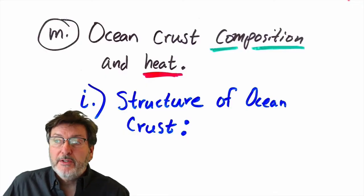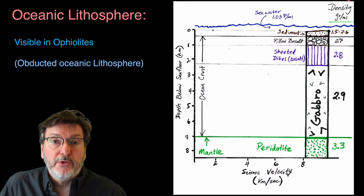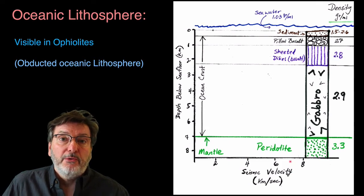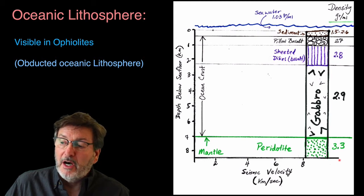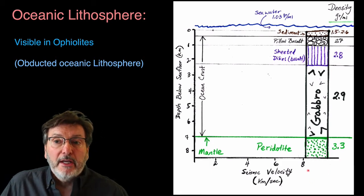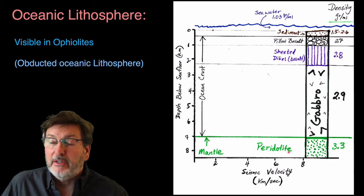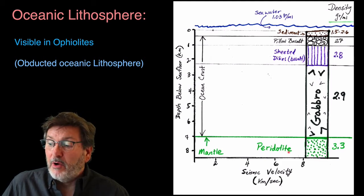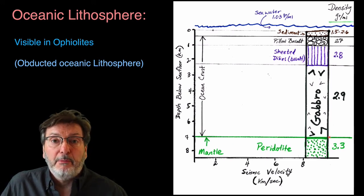Next let's look at ocean crust composition and heat flow through the ocean crust, starting with the actual physical structure. The oceanic lithosphere includes part of the mantle — that frozen upper part. It has a very iron- and magnesium-rich composition, and the mineral that mostly forms is olivine. A rock made mostly of olivine is called peridotite — the gemstone variety of olivine is peridot.